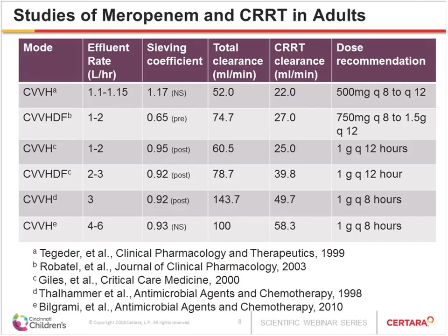Several studies have looked at meropenem dosing in adults receiving CRRT. These studies varied in the mode of CRRT — purely hemofiltration versus hemodialysis — but importantly also differed in effluent rate, which is the main determining factor of drug clearance in patients receiving continuous renal replacement therapy.